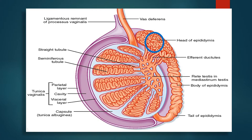The interstitial cells of Leydig, whose main function is to produce testosterone, are also found in the seminiferous tubules.